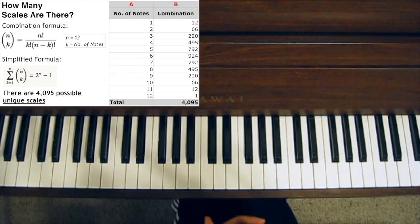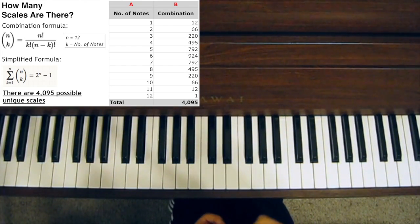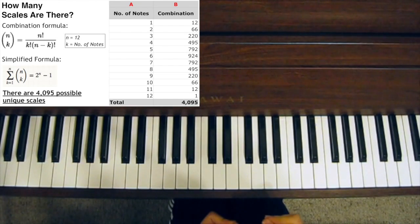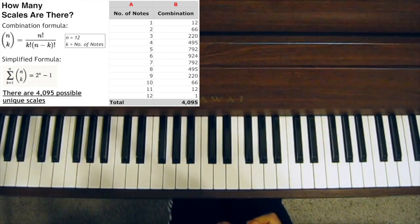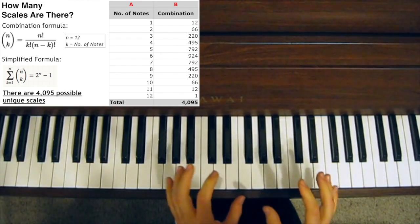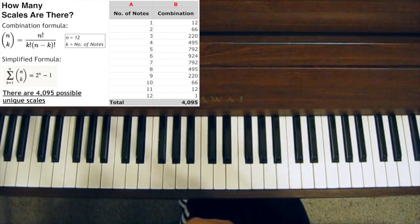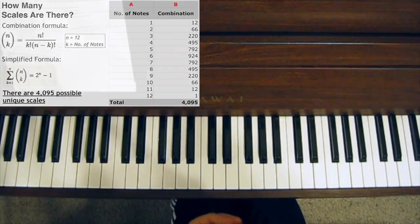Now, there's a mathematical formula to calculate this, and it's called a combination, or a binomial coefficient. Using this formula, we can calculate that there are four thousand and ninety-five different possible unique scales — four thousand and ninety-five different ways of combining these twelve notes, and therefore four thousand and ninety-five different unique scales.